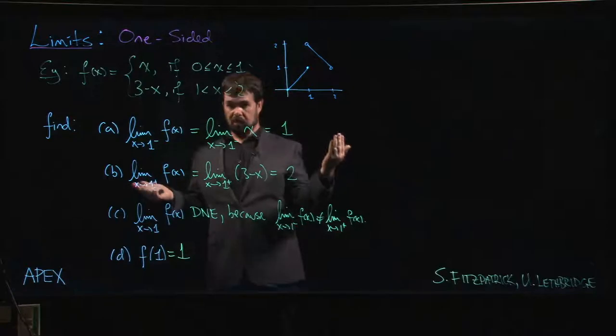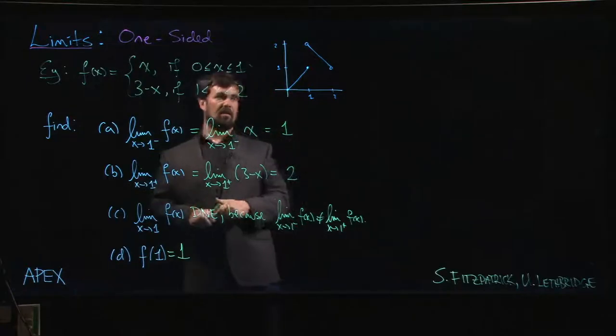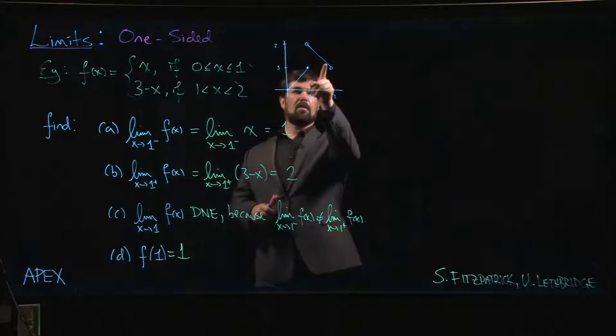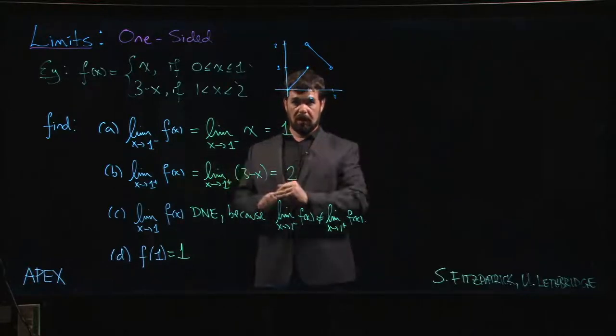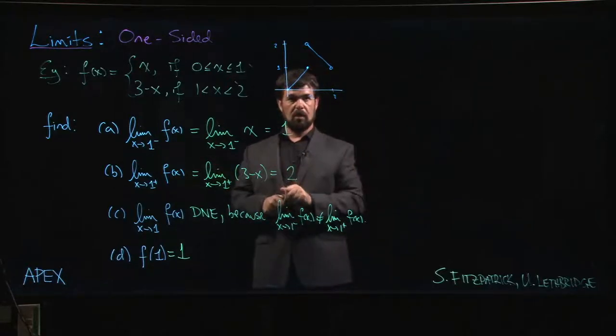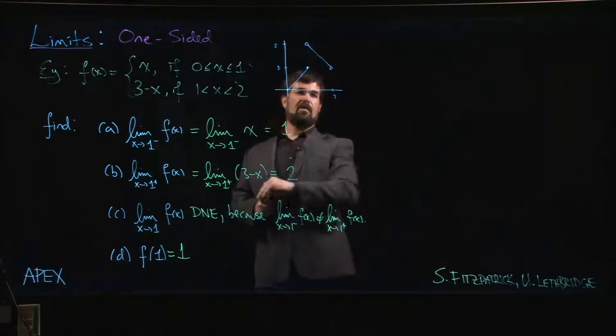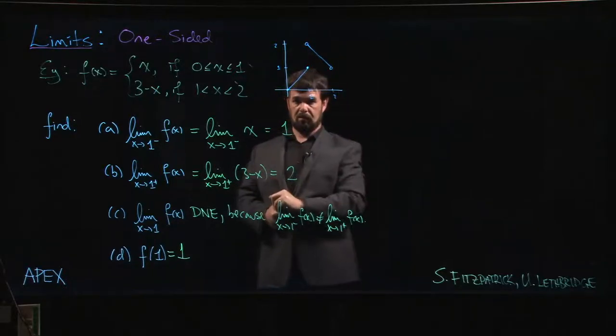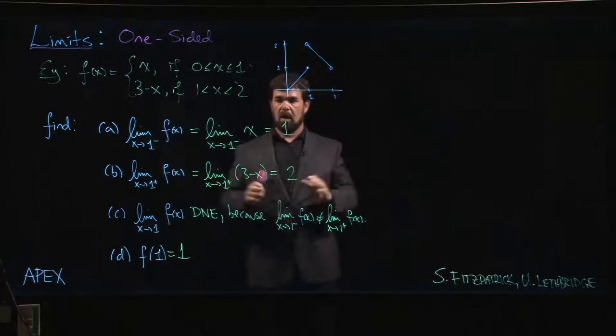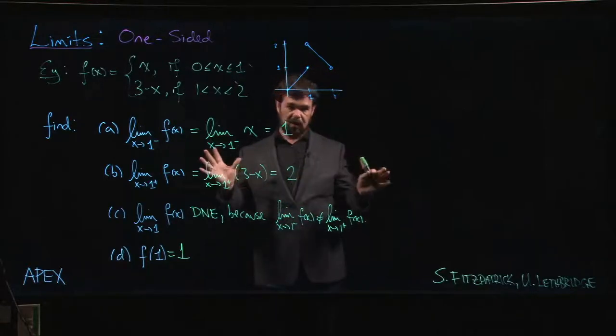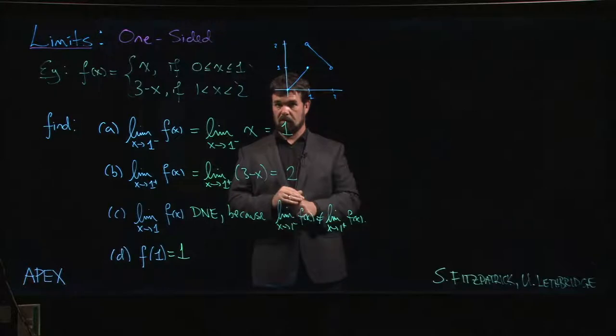Similarly at 2 we can talk about the left hand limit but we can't talk about the right hand limit and we can't talk about the overall limit because f(x) is defined when x is less than 2 but it's not defined when x is bigger than 2. Okay, we'll look at a few more examples to get a feel for this before we move on to the next topic.